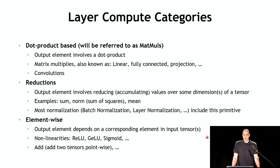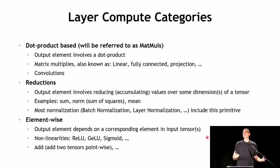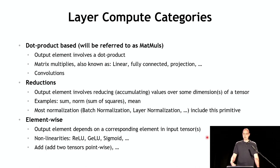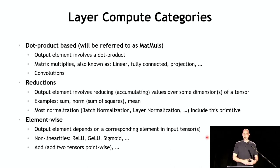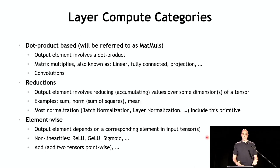The third category is element-wise operations where an input tensor arrives and the operation is performed point-wise — to produce an output element you look only at the corresponding input element, or corresponding elements across a few input tensors such as point-wise addition. Examples include non-linearity functions like ReLU, GeLU, and Sigmoid. The first category — dot product based — is where you get math-intensive layers, especially as matrix multiplies get larger. The next two categories are much more memory-limited, with very few math operations per byte, requiring memory bandwidth or keeping intermediate data on-chip.